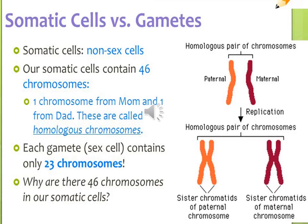In general, we have two types of cells: somatic cells, also called body cells or non-sex cells, and sex cells. A somatic cell is any cell of the body except sperm and egg cells. They are diploid, meaning that they contain two sets of chromosomes, one inherited from each parent.